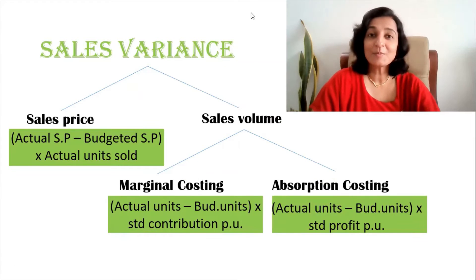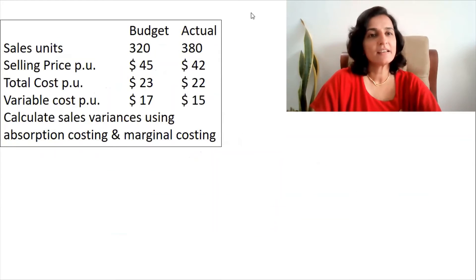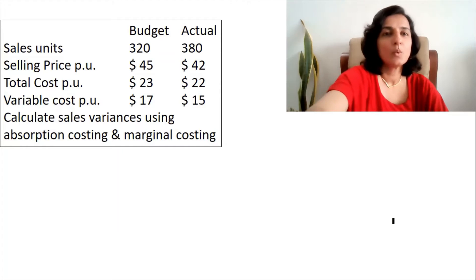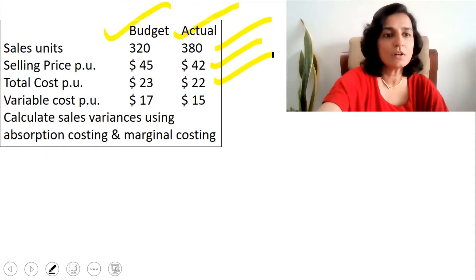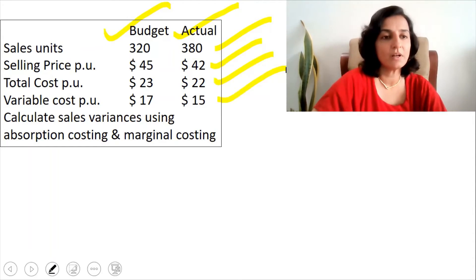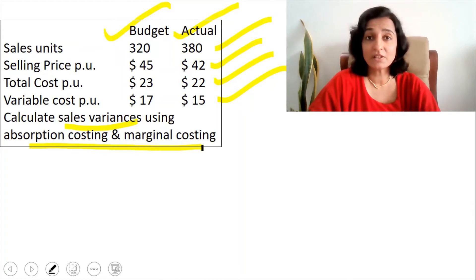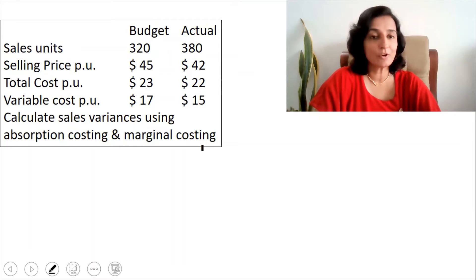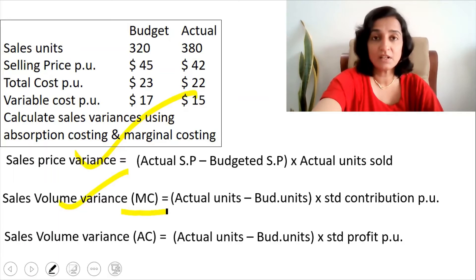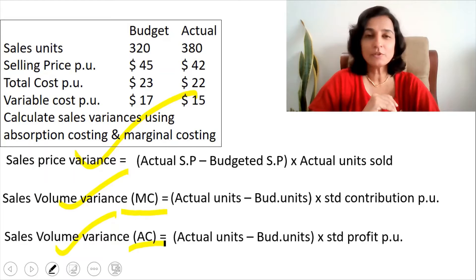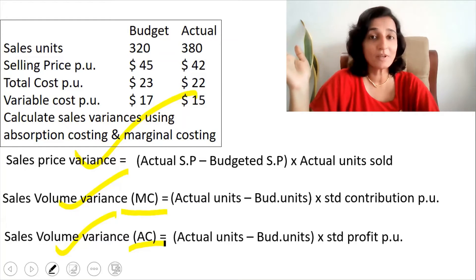Now let's do a problem on sales variances. We have the budgets and actuals — sales in units, selling price, total cost, and variable cost are all given. We need to calculate sales variances using both absorption costing and marginal costing. The formulas to apply are: sales price variance, sales volume variance under marginal costing, and sales volume variance under absorption costing.